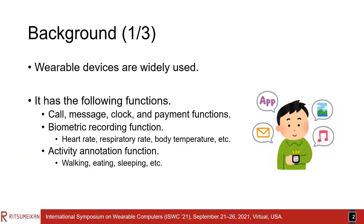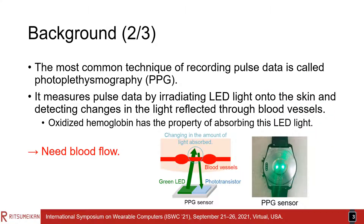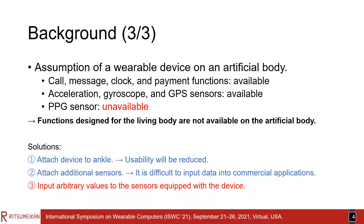First, I will explain the background on my research. With the growing awareness of health management, wearable devices that record biometric information have become widely used. The most common technique of recording pulse data is called PPG. It measures pulse data by irradiating LED light onto the skin and detecting changes in the light reflected through blood vessels. Due to this mechanism, blood flow is necessary for the PPG sensor to measure the value.